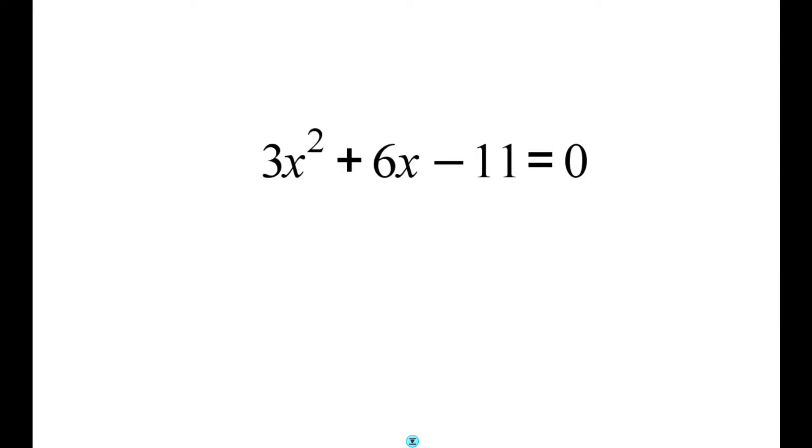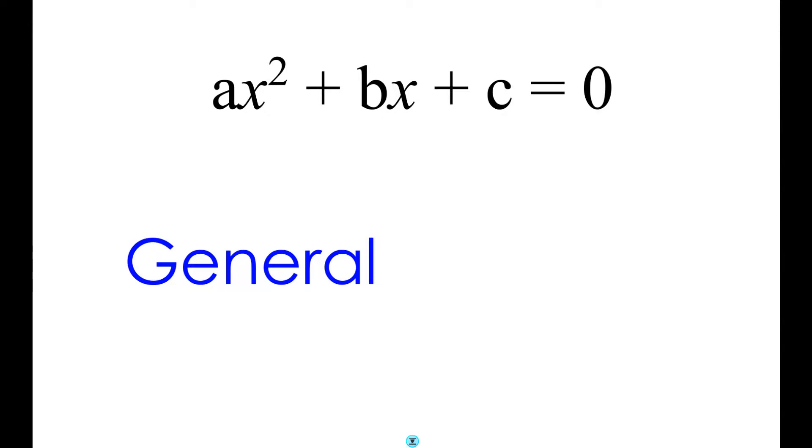So what we're going to do, instead of using actual numbers and giving a specific example, instead we can generalize this by replacing the numbers with other letters, a, b, and c, like this. Once we do that, we say that this is the general form for any and all quadratic equations. So there's only one general form and this is it. All quadratic equations will look a little bit like this.